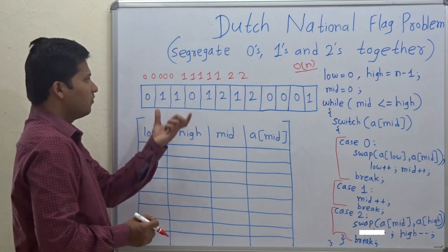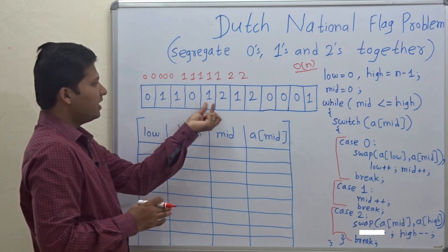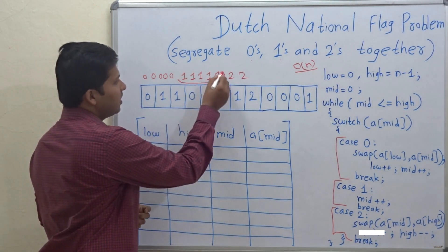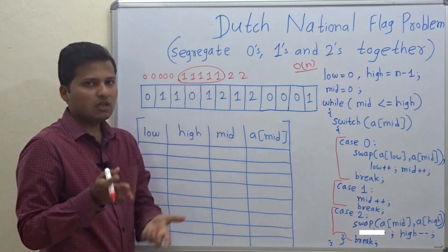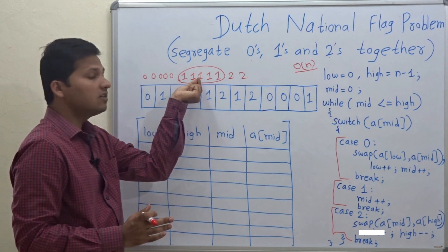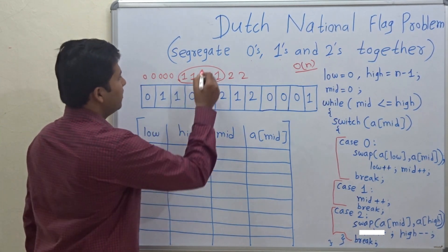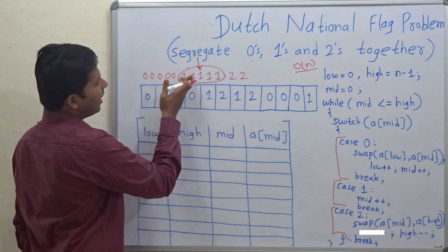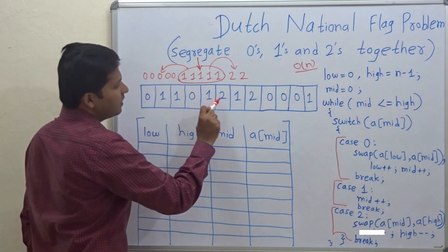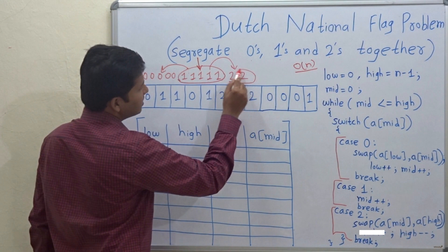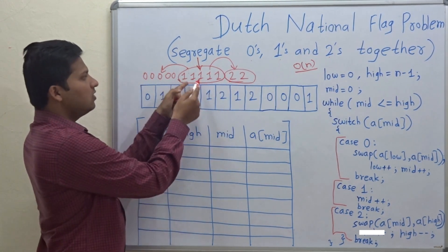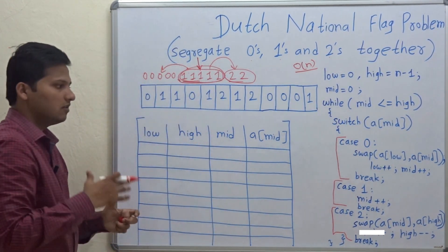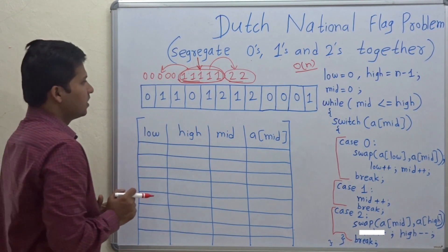In this solution, we consider one element will be present in the middle. Segregating zeros, ones, and twos does not mean one must be in the middle — even two or zero can be in the middle. You select that as a fixed pole. Whenever you get zero you take it to the left side, whenever you get two you put it on the right side, and automatically all the ones remain in the middle.